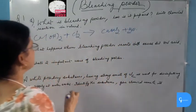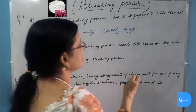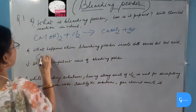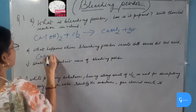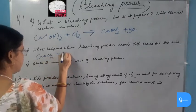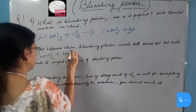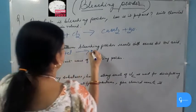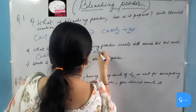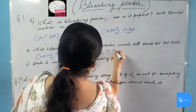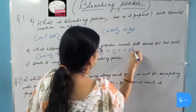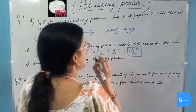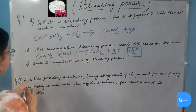What happens when bleaching powder reacts with excess of dilute hydrochloric acid? When bleaching powder reacts with excess of hydrochloric acid, it liberates chlorine. And this chlorine is responsible for the bleaching action of bleaching powder.